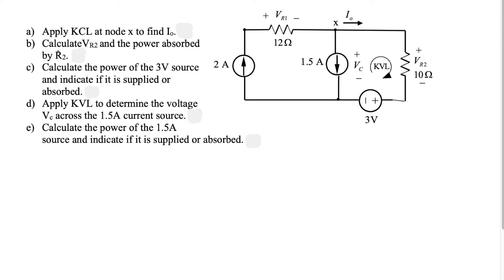First we have number a, and it says apply KCL at node X to find i_naught. We have to figure out what current value i_naught is at this node. The rule for KCL at any node is that the current entering the node must equal the current leaving the node — the sum of the currents equals zero — and that is what we're going to use to solve for i_naught.